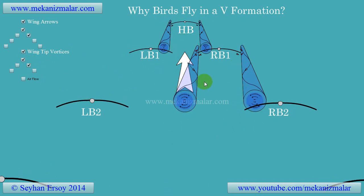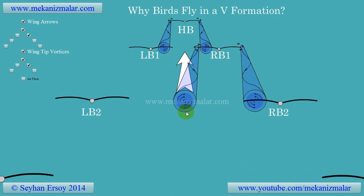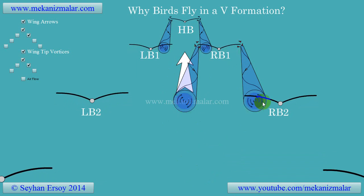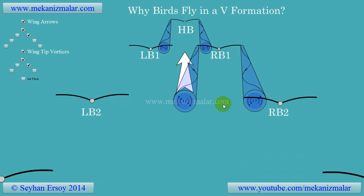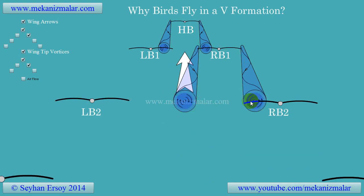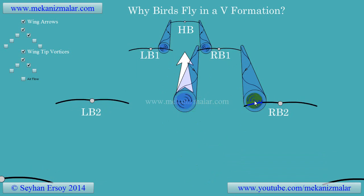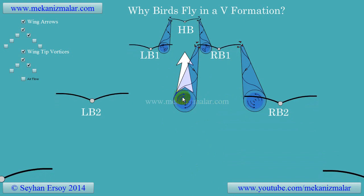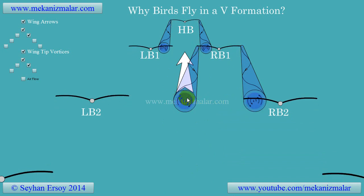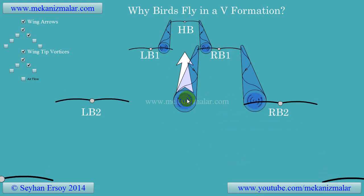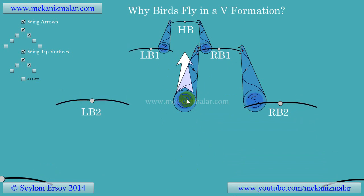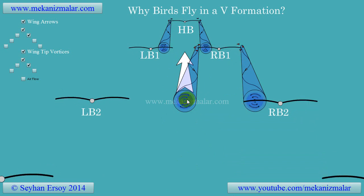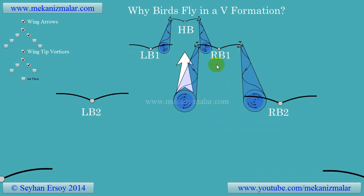As you can see, they are rotating in opposite directions. While the right wing vortex rotates in the counter-clockwise direction, the left wing vortex rotates in the clockwise direction. These air rotations induce airflow patterns around the surrounding air.